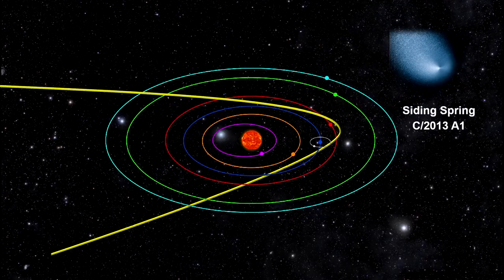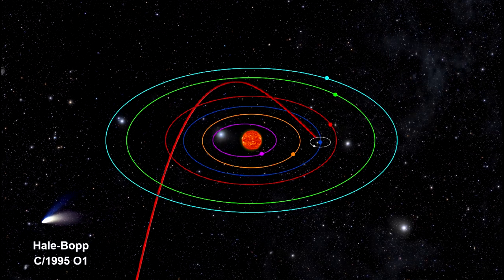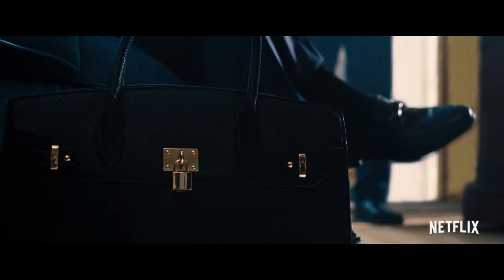Now, comets that are from the Oort Cloud, they are called long period comets. These comets will take more than 250,000 years to make just one trip around the Sun.